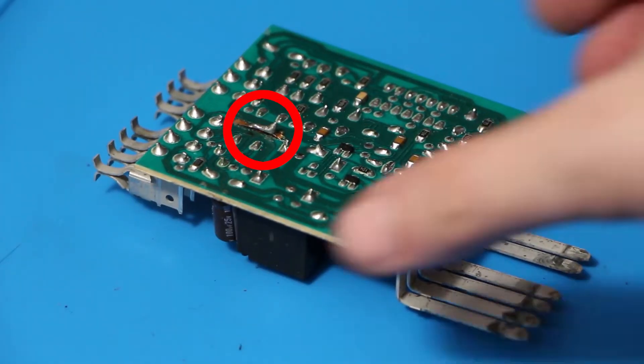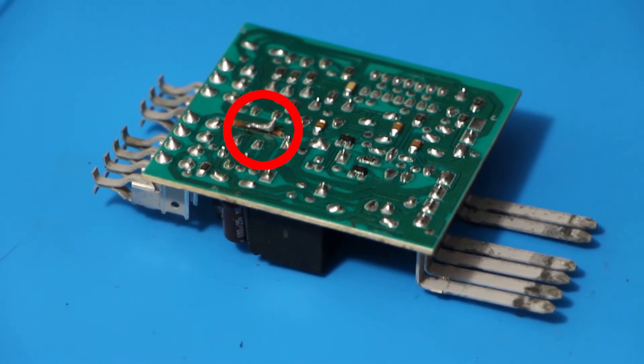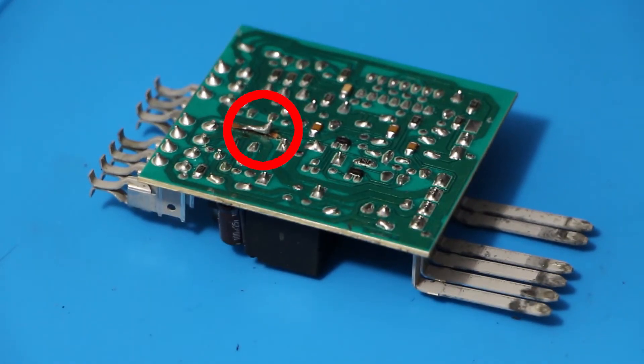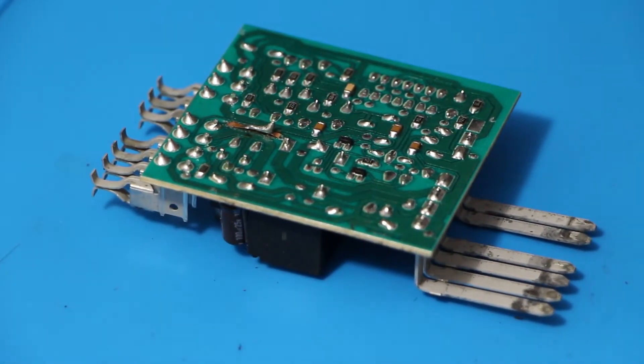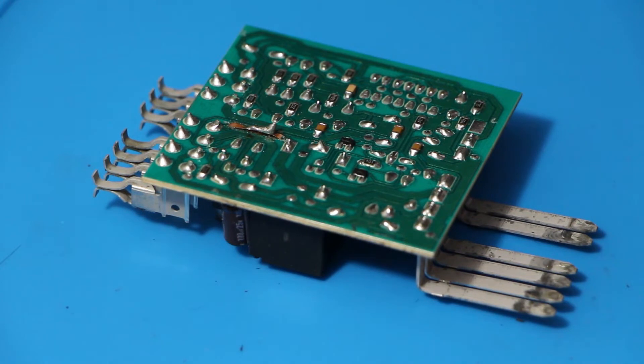You can see here the traces that had already been repaired in the past. It looks like it has failed again. Rather than this dodgy repair, I'm going to solder on a small section of wire to bridge the pins.